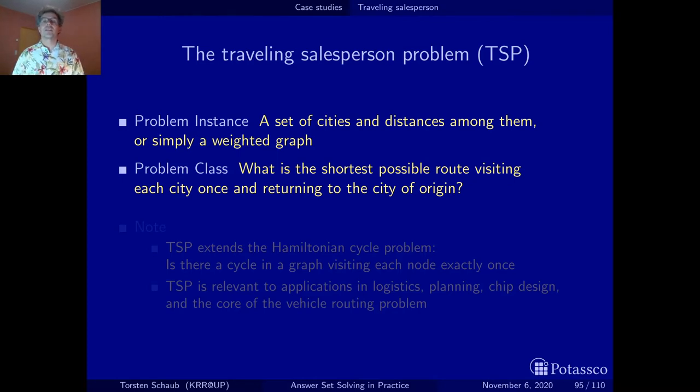Traveling salespersons normally travel around cities and the idea is that the graph, our weighted graph, represents a network of cities where each edge or arc represents a road between the city and the weight on this arc represents the distance among the cities. The problem consists of the question, what is the shortest possible route that visits each city exactly once and returns at the end to the origin? So we have a cycle.